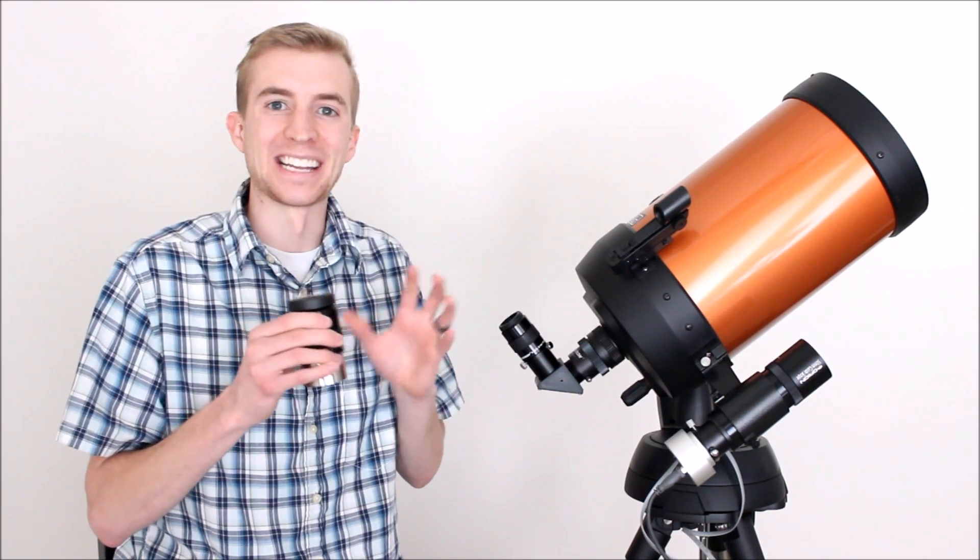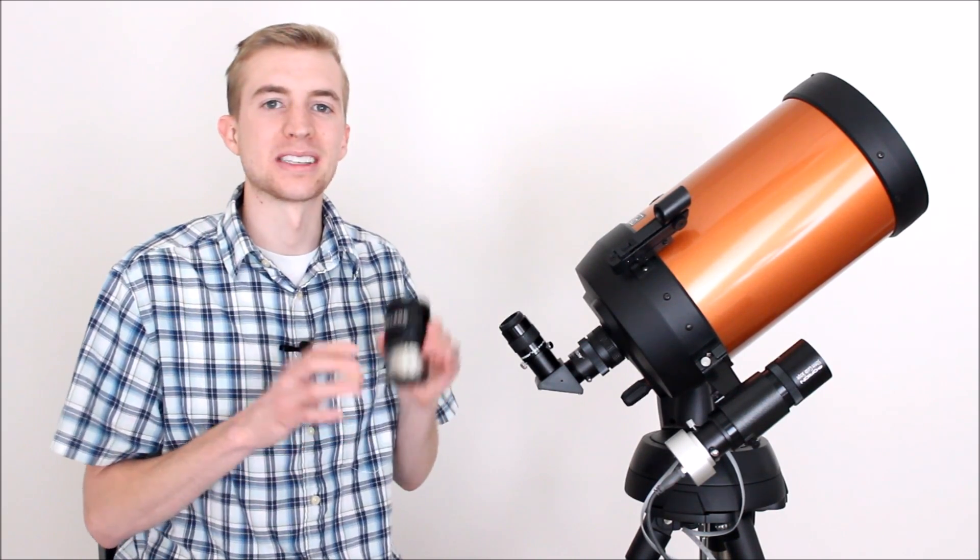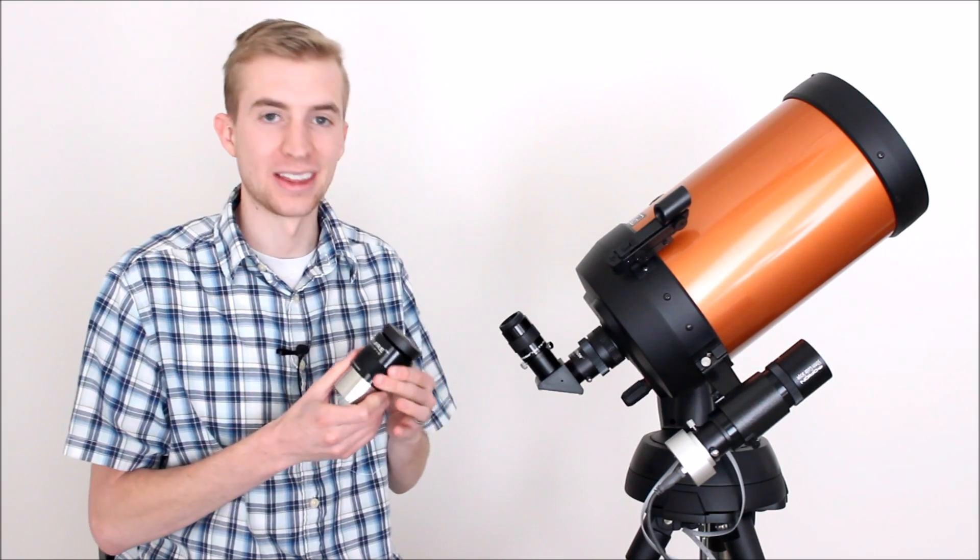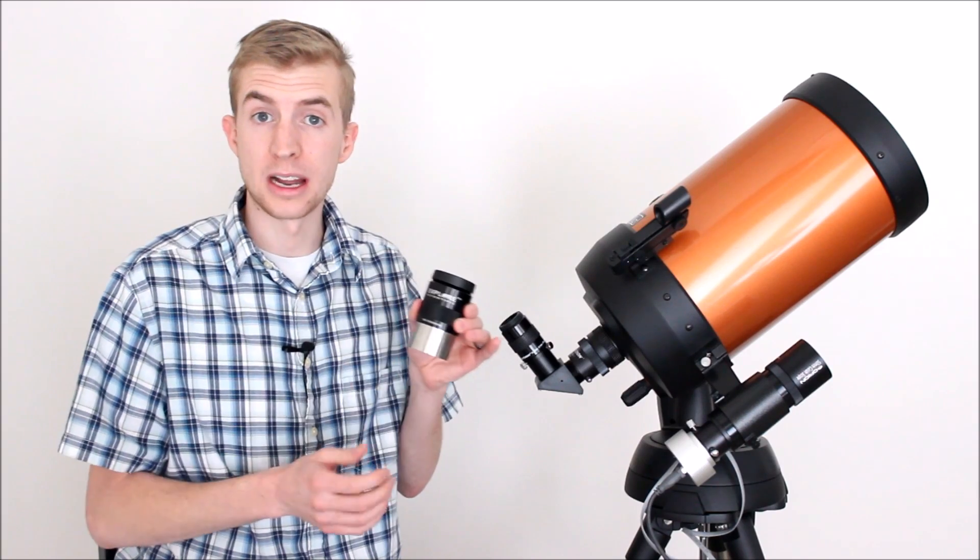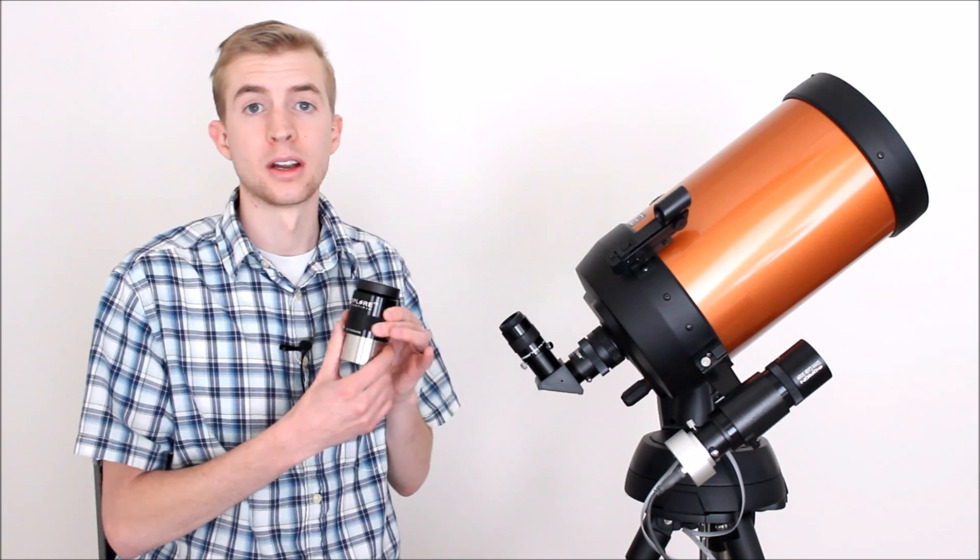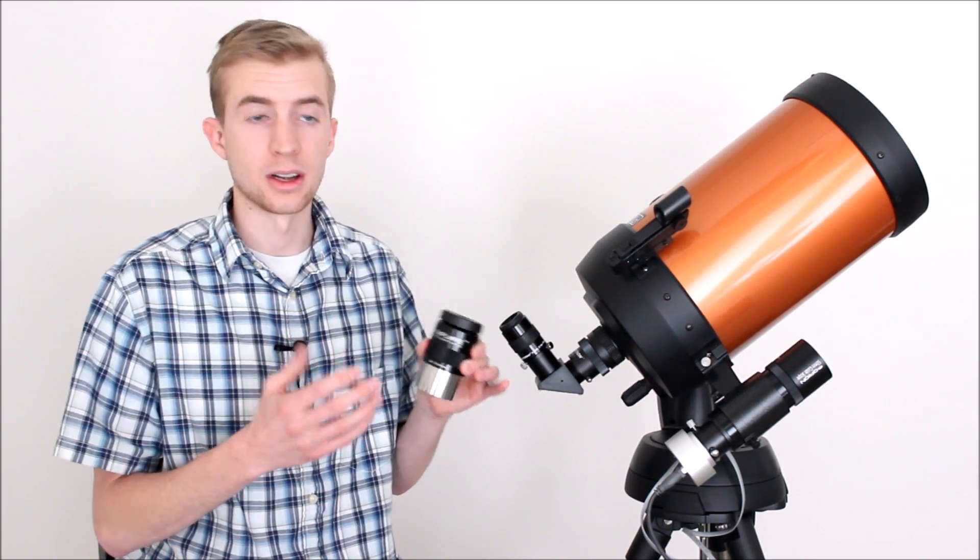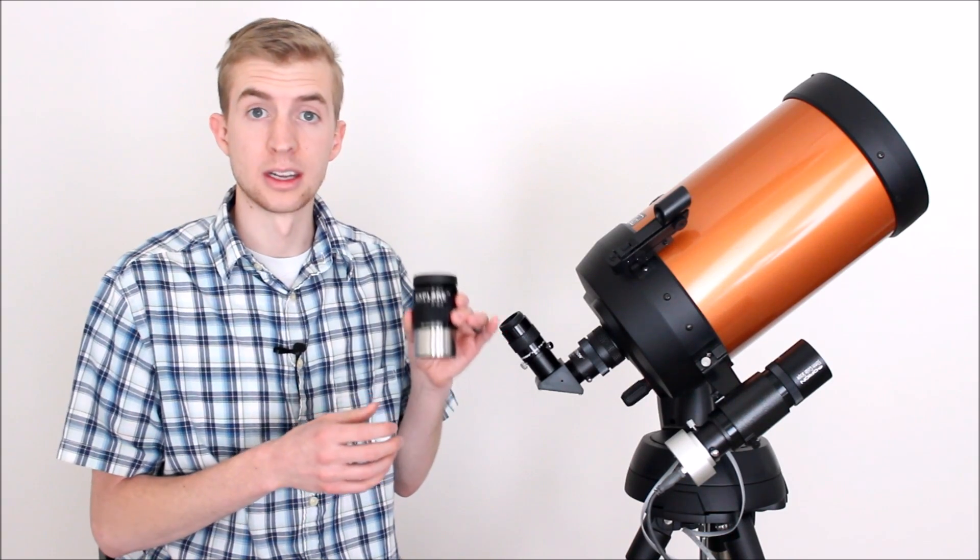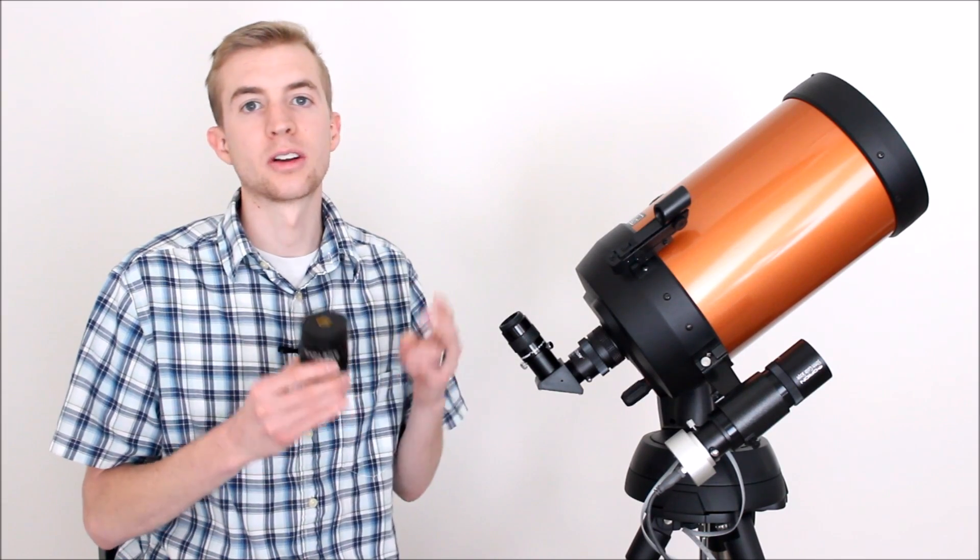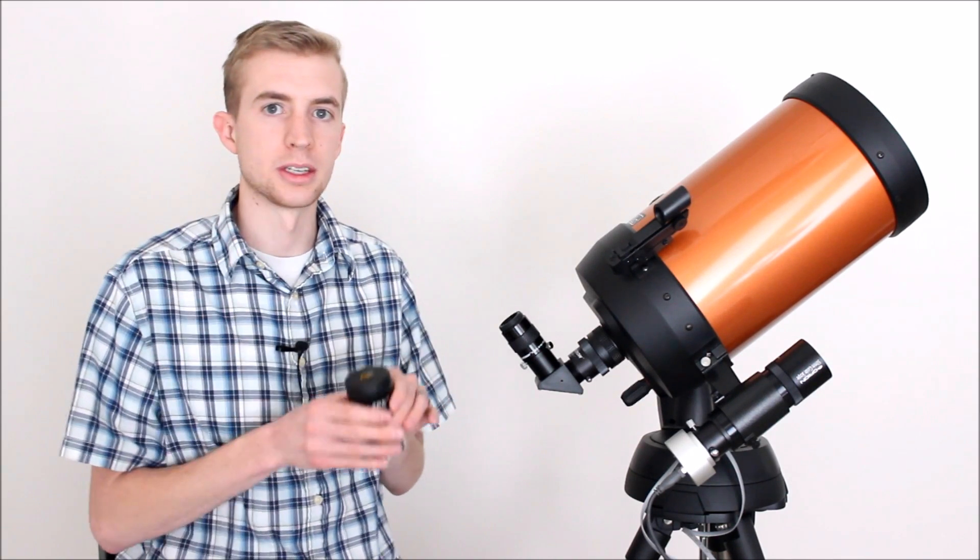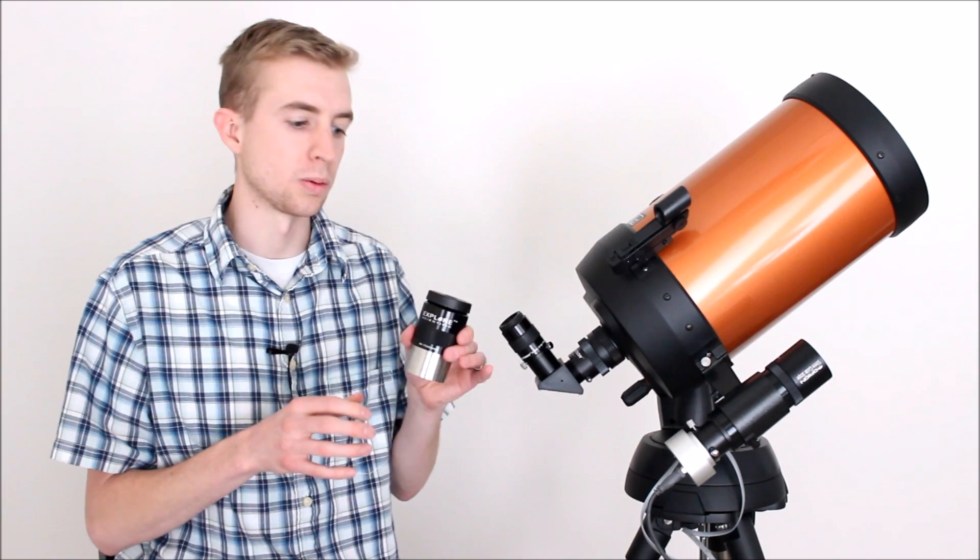2-inch eyepieces will open up your telescope to just a realm of seeing. You can see so much more with 2-inch eyepieces. They're so much easier to observe through and they just look awesome too. Explorer Scientific is a really good brand to go to for 2-inch eyepieces. They're affordable generally compared to other brands and they make really good 2-inch eyepieces from several varying degree ranges, from 70 degrees to 82 all the way up to like 120 degrees.